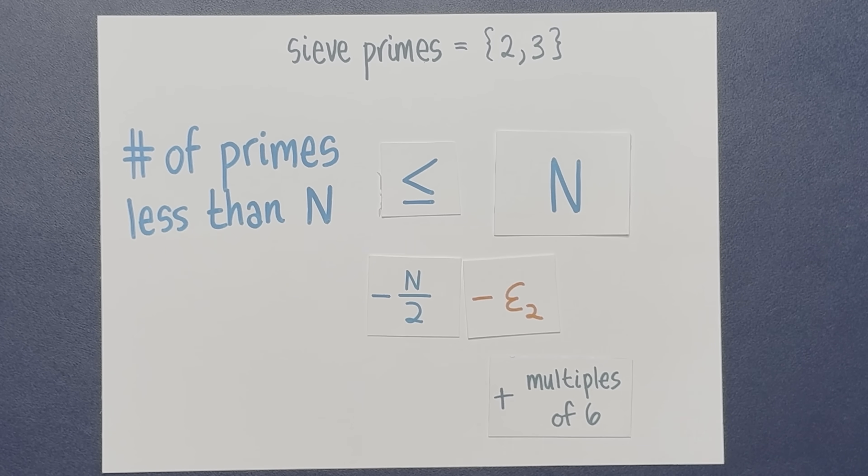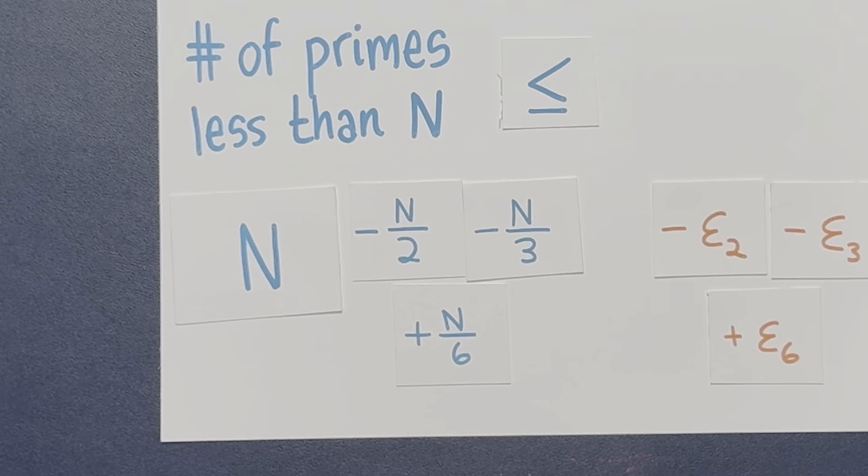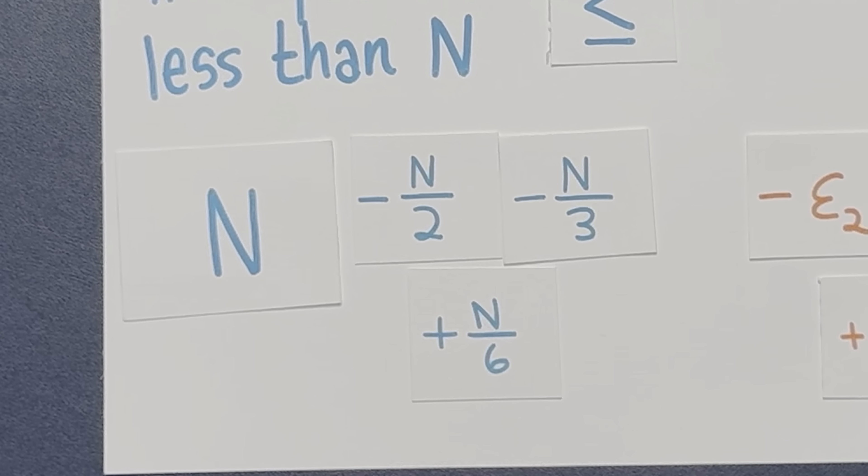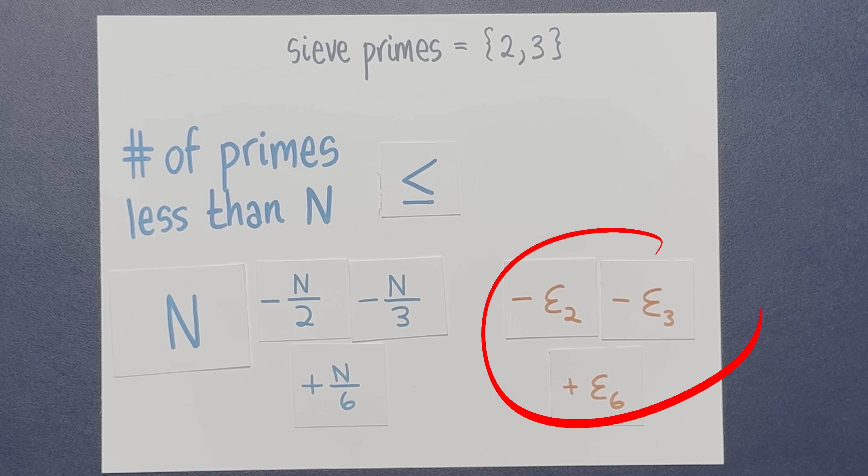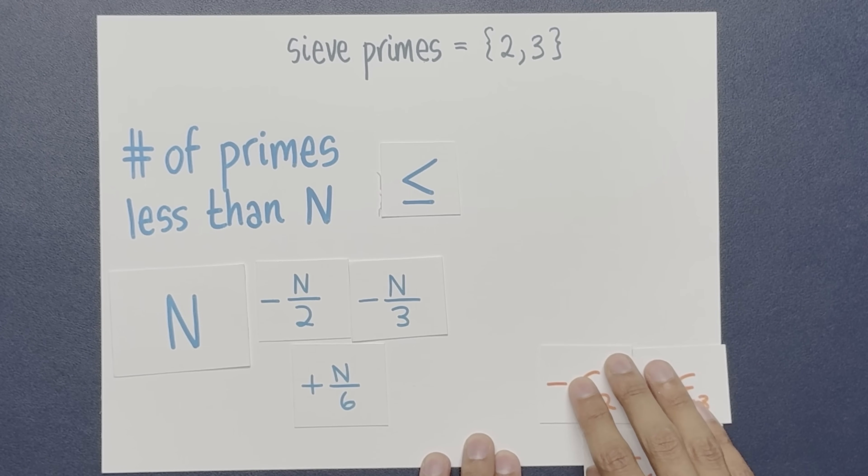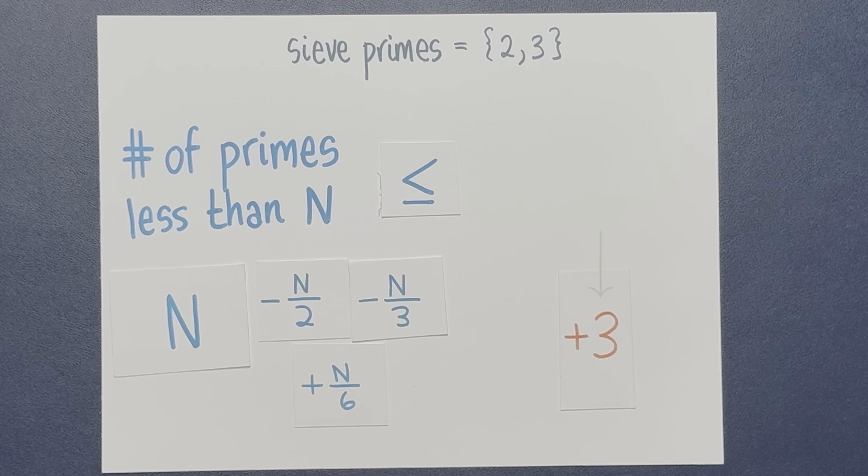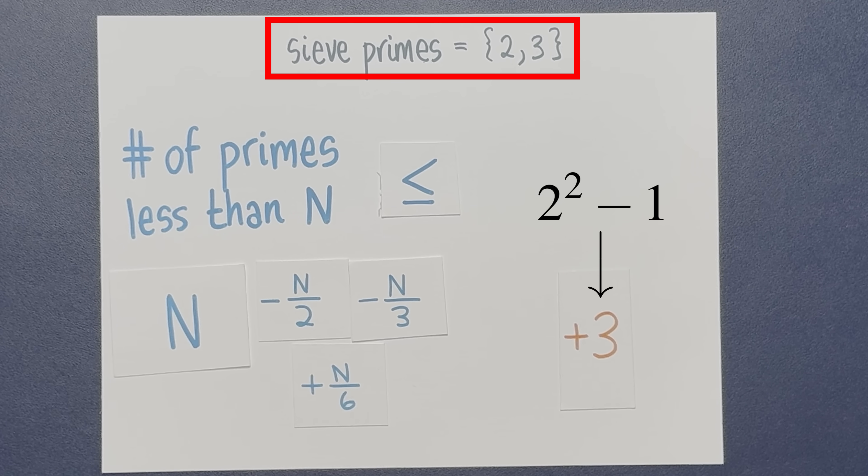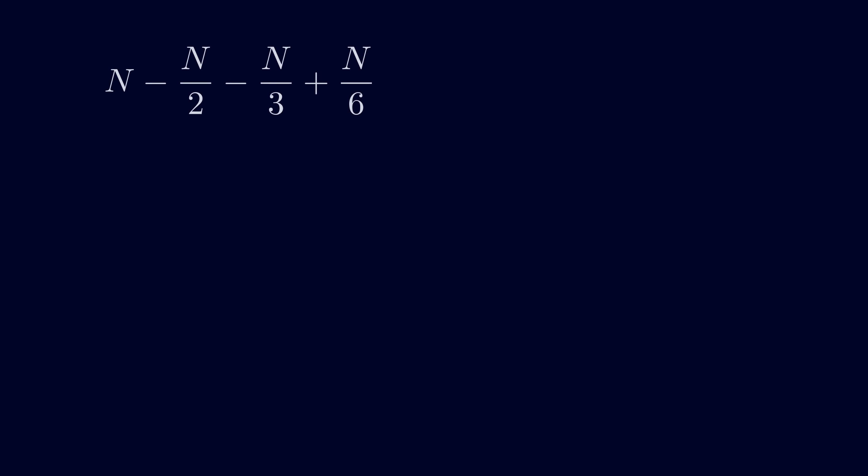If we substitute these expressions into our formula, it looks like this. Now let's group all the n terms together, and all the epsilon terms together. These n terms are the main terms. These epsilon terms are the error terms. But remember that the epsilon terms are between minus 1 and 1, and there are 3 of them. So we can replace the epsilons with a 3, at the cost of potentially making the right side a bit bigger. Note that 3 is 2 to the 2 minus 1. There are 2 primes, and that's where the exponent 2 comes from.